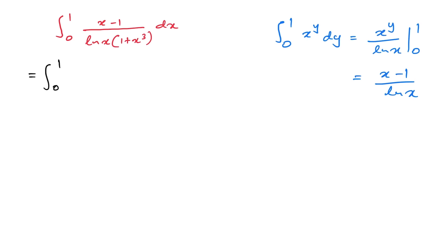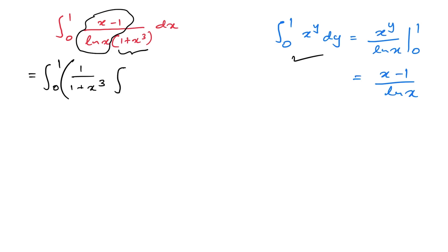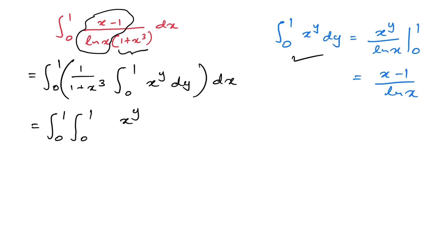So we can write our integral as the integral from 0 to 1 of 1 over (1 plus x cubed), and instead of (x minus 1)/ln(x) we substitute the integral from 0 to 1 of x to the y dy, times dx. This gives us the double integral from 0 to 1 of x to the y over (1 plus x cubed) dx dy.